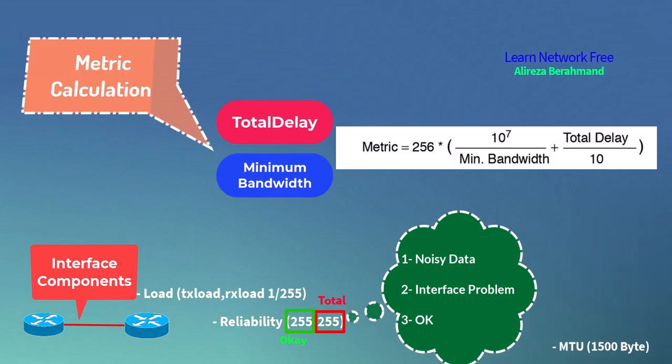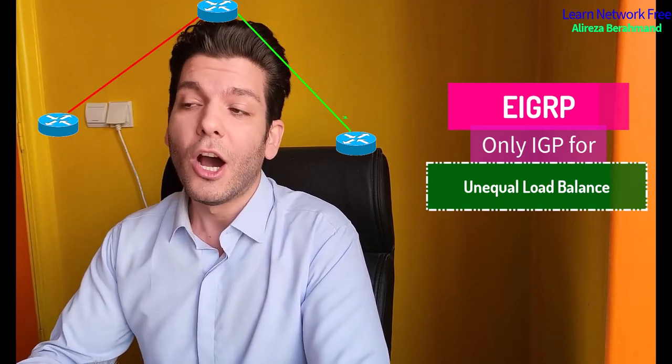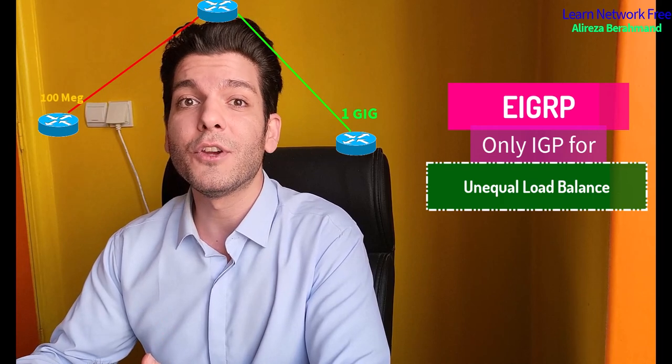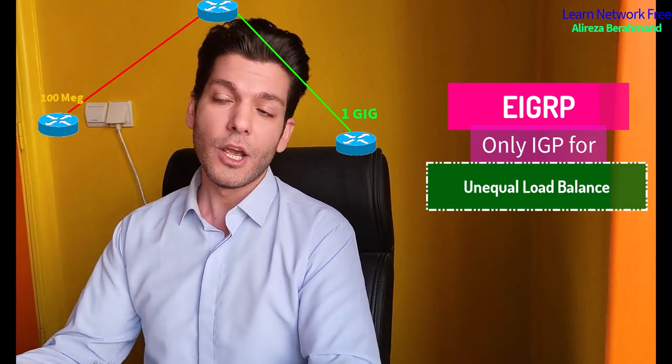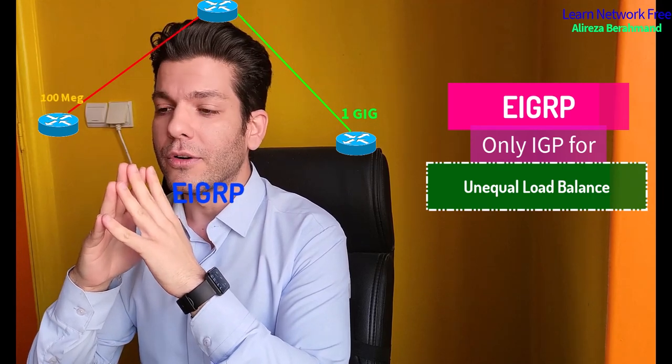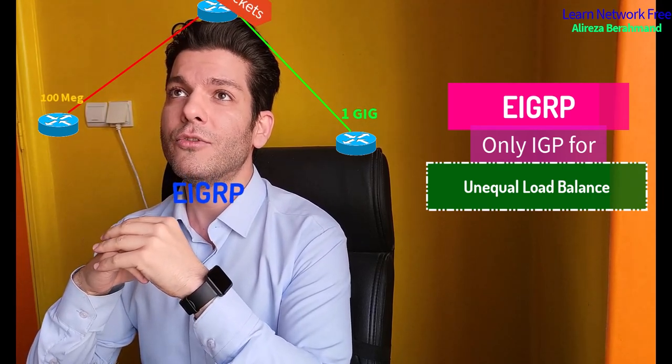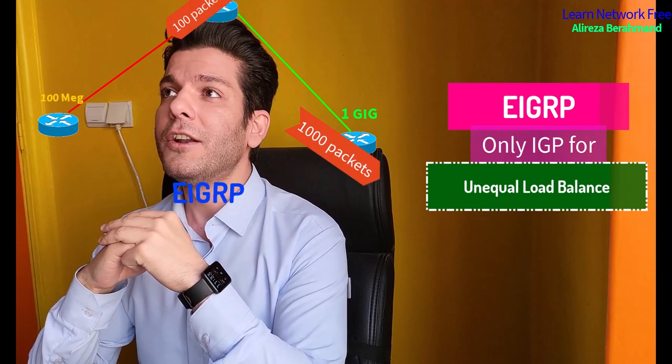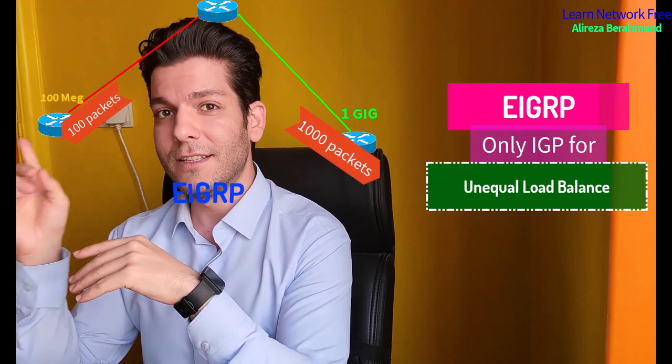Because of this algorithm, EIGRP is the only IGP where you can implement unequal load balancing. Unequal load balancing allows a router to send traffic over multiple paths with different costs. For example, 1000 packets go through a Gigabit interface and 100 packets go through a FastEthernet interface — that is unequal load balancing.